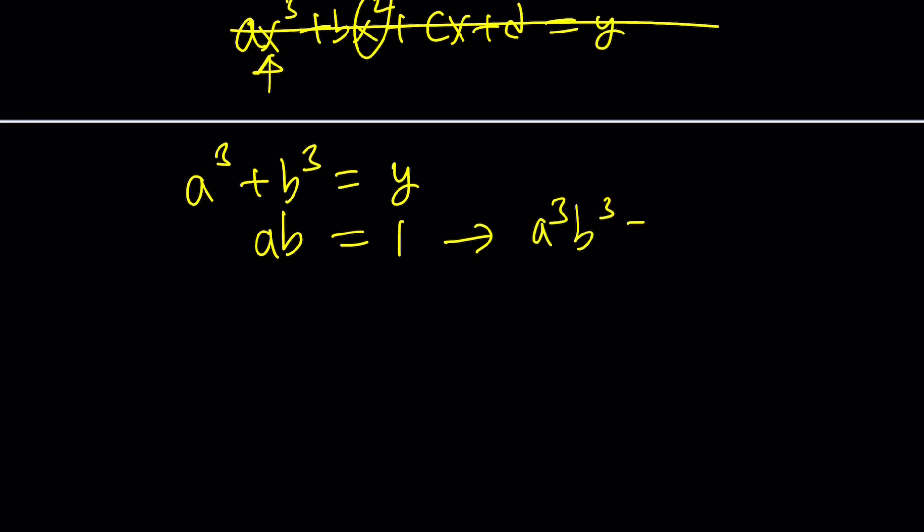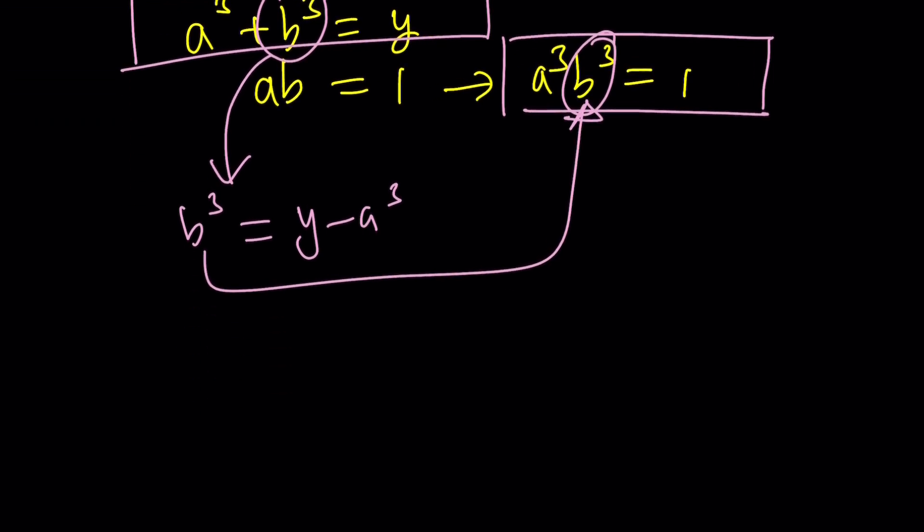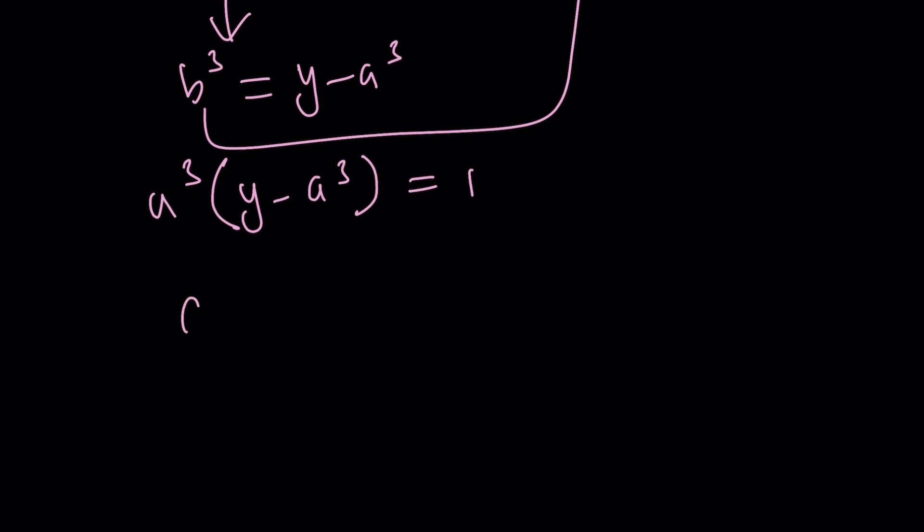If I cube both sides here, I get the following. And now, I can go ahead and use these two equations. But I'd like to use substitution. So why not isolate b cubed from here and write it as y minus a cubed? And then you're going to substitute that here. Make sense? That's the formula. That's how it works. So a cubed times b cubed, which is y minus a cubed, equals 1.